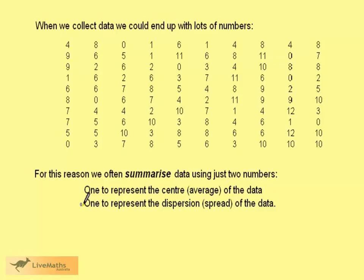The first is one to represent the center or average of the data. The second is a number to represent the dispersion or spread of the data from the center.